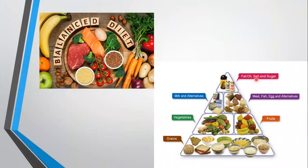Each individual's dietary requirement is different. For example, an energetic person needs more carbohydrate and a growing child needs more protein. A diet that contains all the important nutrients in the right amount is called a complete or balanced diet. If a diet consists of a single or very few food items, it will be unbalanced, because no single food contains all the nutrients we need in the right proportion for us to be healthy.